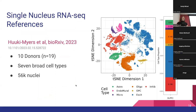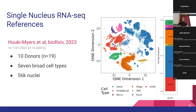The first dataset is our single nucleus RNA-seq reference — 10 donors, 19 slides, previously published in the spatial DLPFC paper. We're studying this at the resolution of seven broad cell types: astrocytes, endothelial cells, microglia, oligodendrocytes, oligodendrocyte precursor cells (OPCs), and excitatory and inhibitory neurons. We know there are more subtypes, but we're focusing at this broad level. Overall, this is a dataset of 56,000 nuclei, which we'll be using as our single nucleus reference.